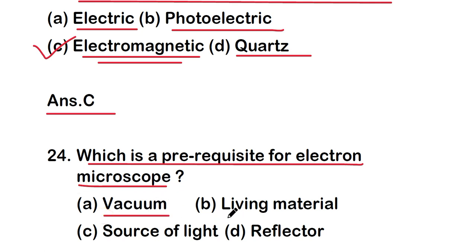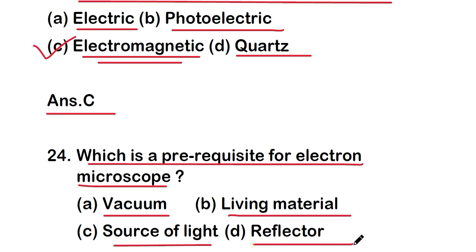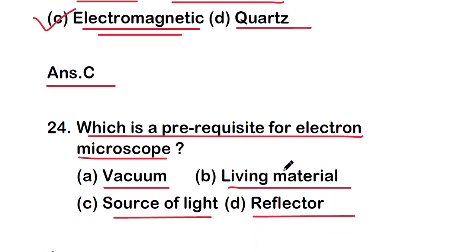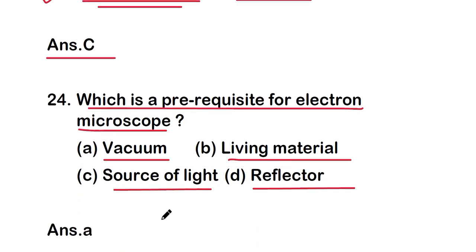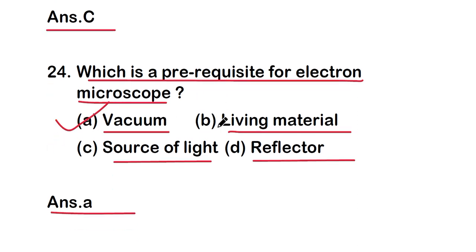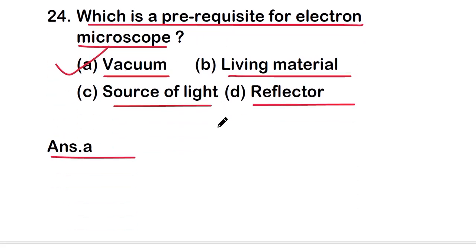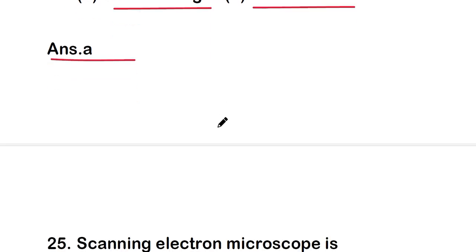The next question is: which is a pre-requisite for an electron microscope — vacuum, living material, source of light, or reflector? The right answer is option A, that is vacuum. Vacuum is a pre-requisite for an electron microscope.